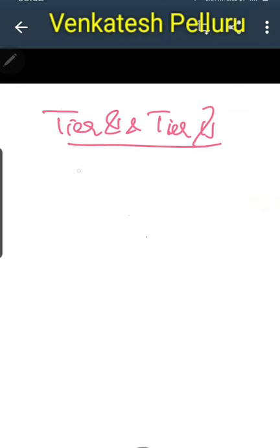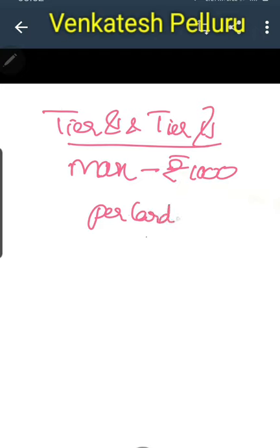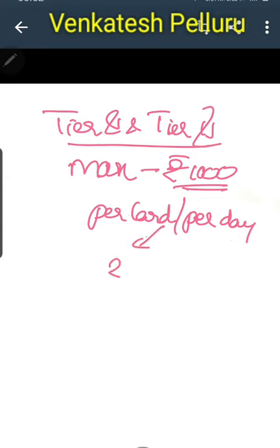In rural areas, banking terminology uses Tier 1 and Tier 2 centers. The maximum limit of withdrawal at POS terminals in Tier 1 and Tier 2 centers is Rs. 1,000 per card per day. For Tier 3 to Tier 6 cities, the maximum per card per day is Rs. 2,000. This is a very important point and a question can be asked about the maximum or minimum limits.